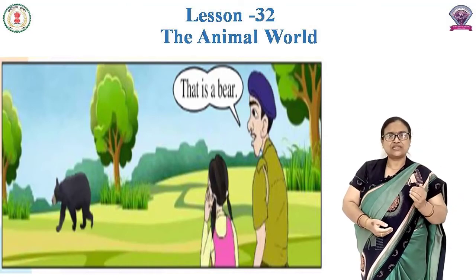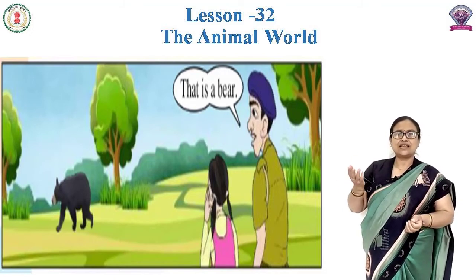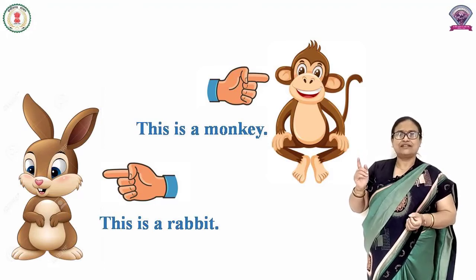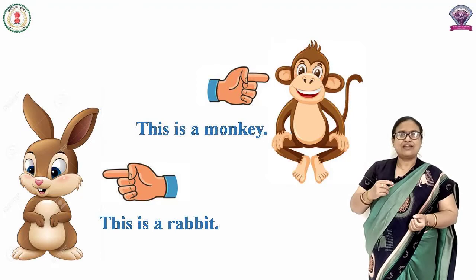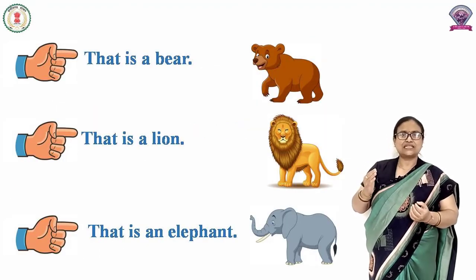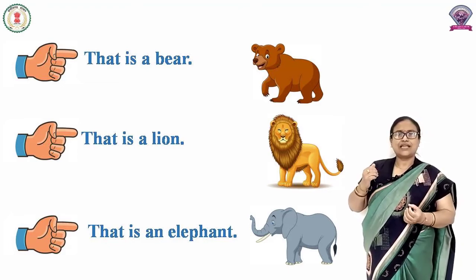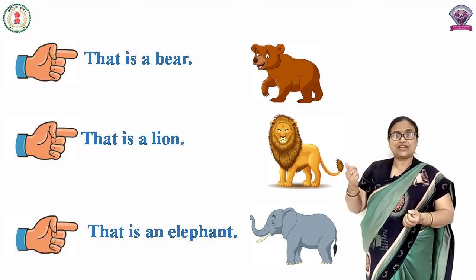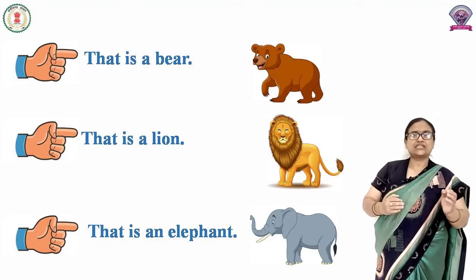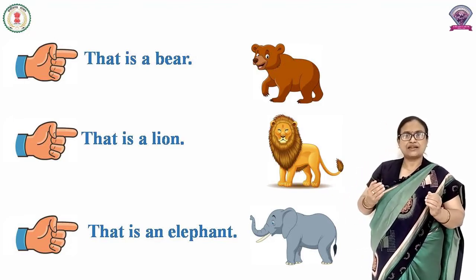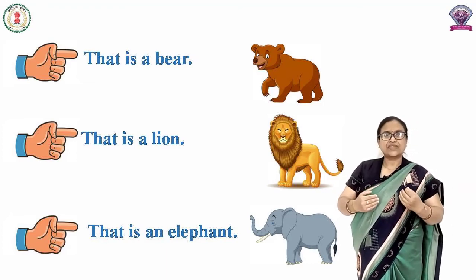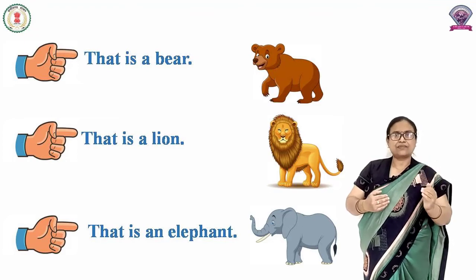So kids, this is a monkey. This is a rabbit. This is a bear. That is a bear, that is a lion, that is an elephant. That is an elephant, that is a bear, that is an elephant. 'This' and 'that' can both be used depending on the distance of the animal.